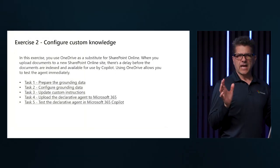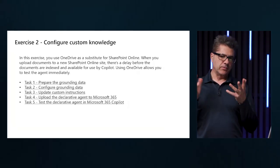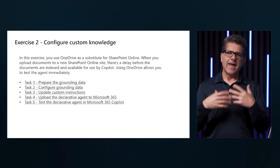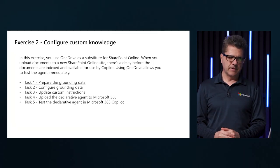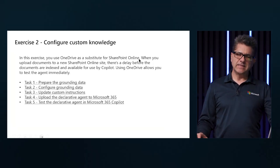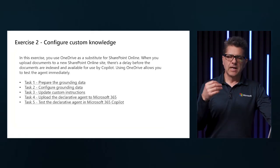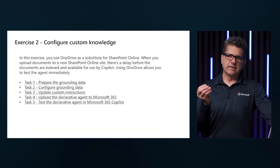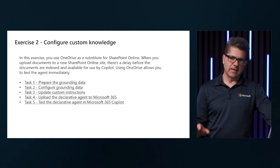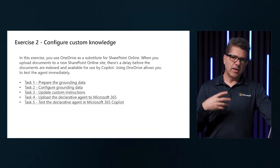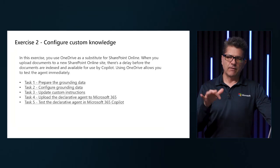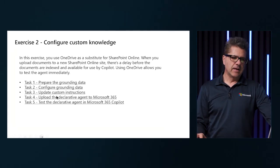Now let's go to the second exercise. The first exercise was simple — I created an agent and it's available to us. Now we are going to add custom knowledge to it. Preparing the grounding data is important. If I am going to use OneDrive, I need to know where the data is — where are the files I'm going to use? I need to make sure I have access to them and that they are in SharePoint or OneDrive. Then configure the grounding data in a particular format or content.